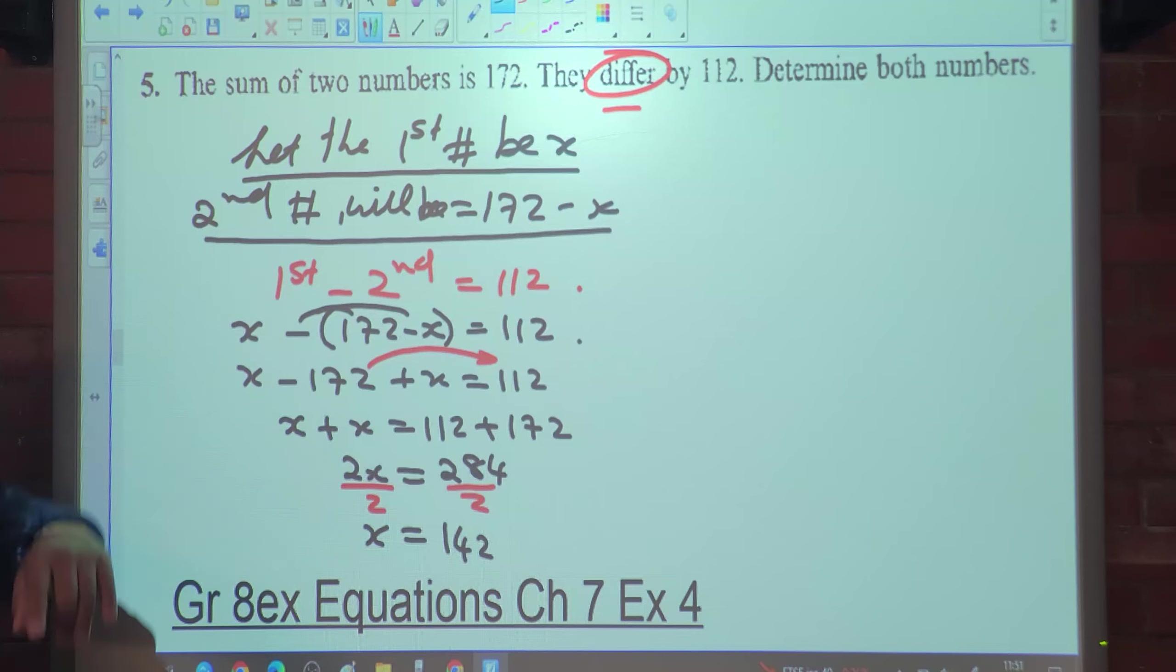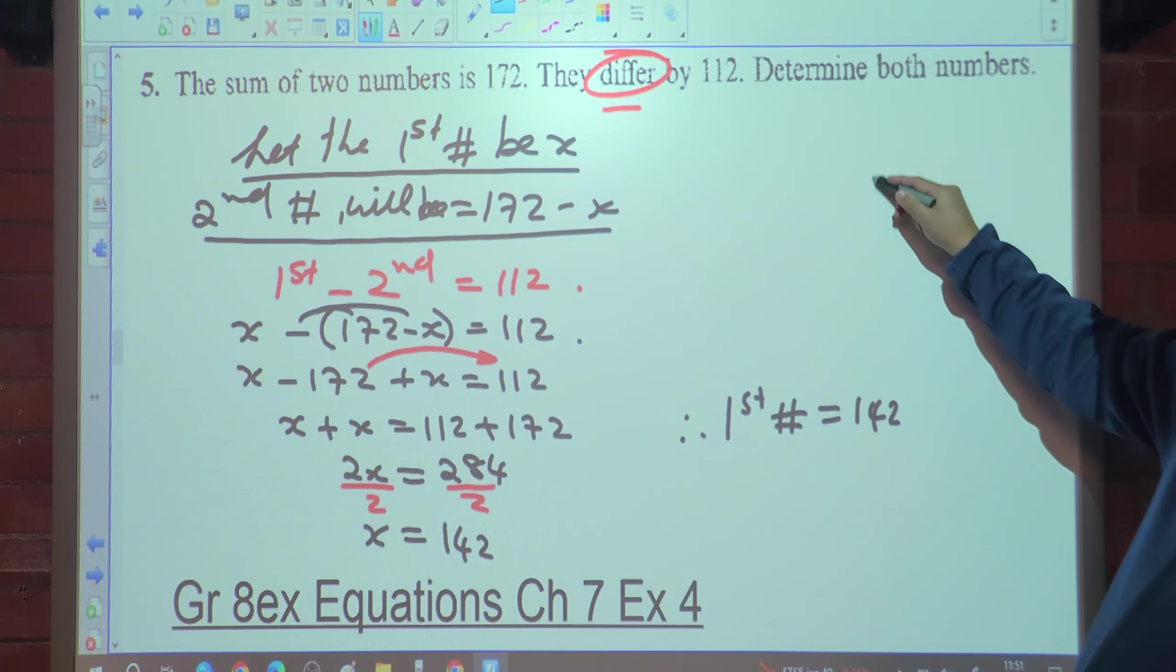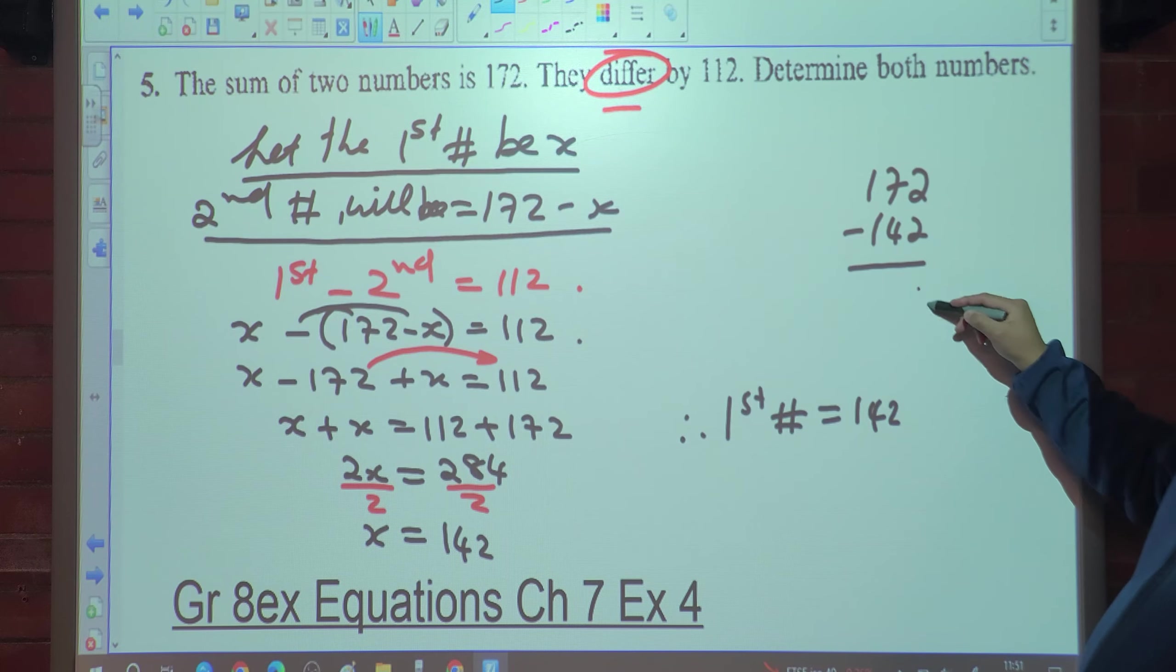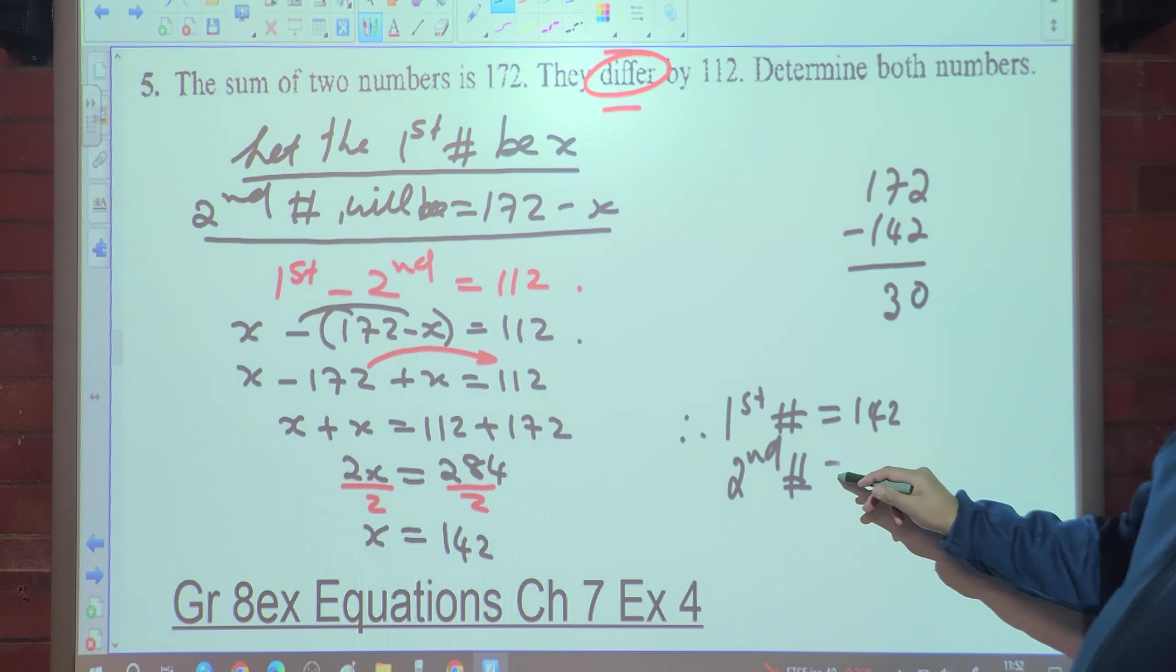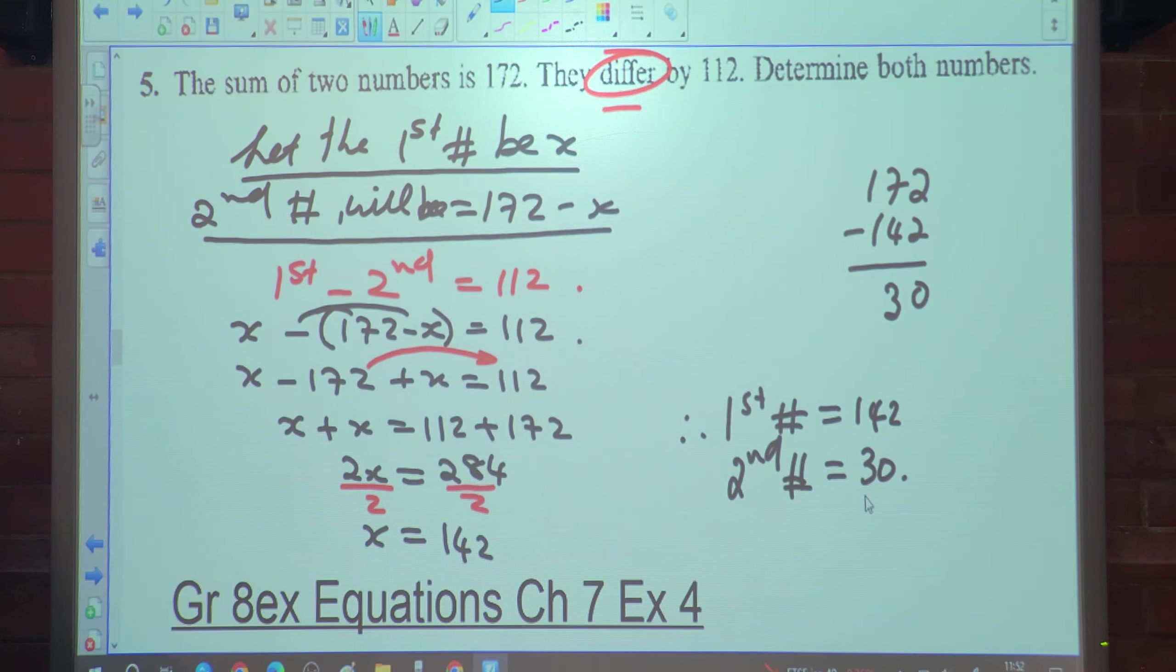Determine both numbers. Therefore, the first number is equal to 142, and the second number is 172 minus 142, which gives us 30. Who got that answer? So for the second number I said it would be y and you got the same answer? Well done. This is another way of doing it. In grade 10 we use two variables. You were ahead of your grade, but you can work it out by all means. Any confusion or question related to question 5?